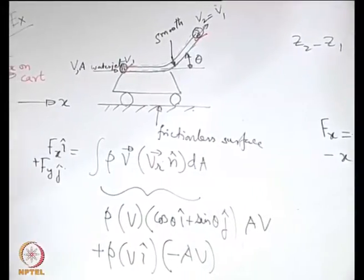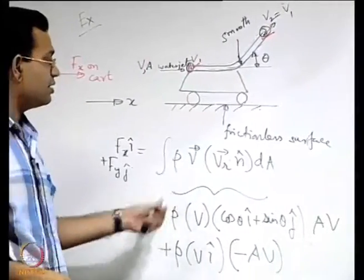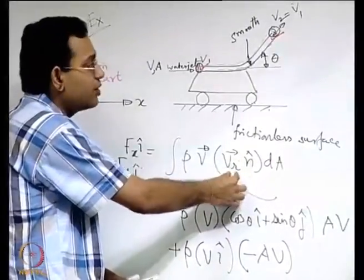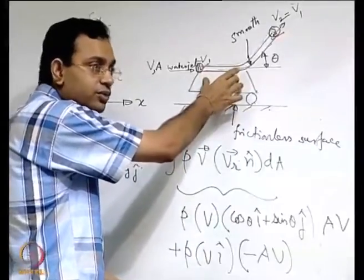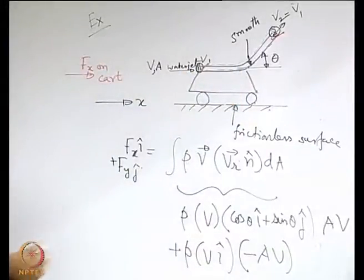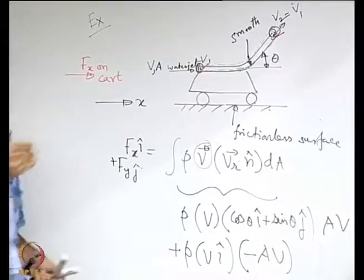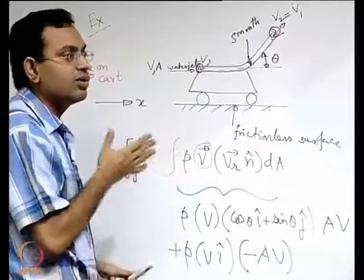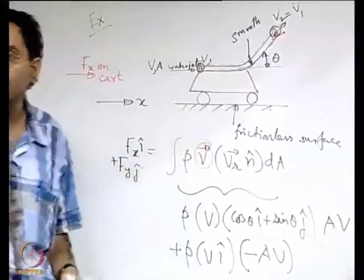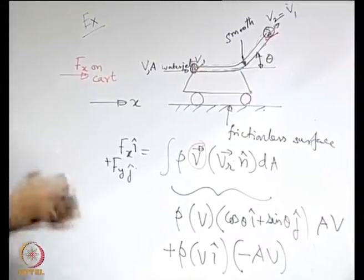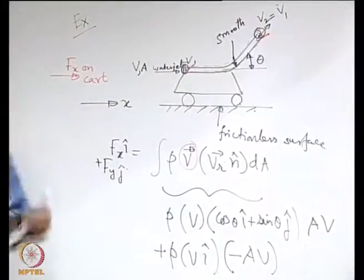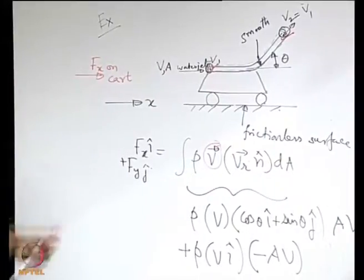If the cart moves, the question arises: is this analysis still valid? We need to use relative velocity, but we do not know the cart's velocity. So how do we proceed? And should we use absolute or relative velocity? These questions will be addressed when we consider moving reference frames.